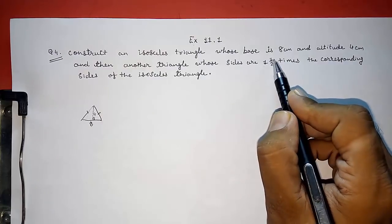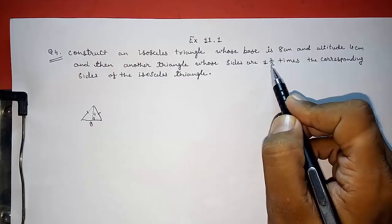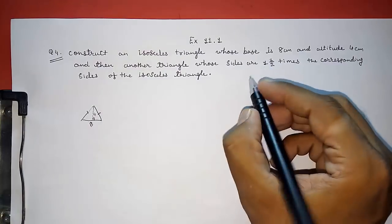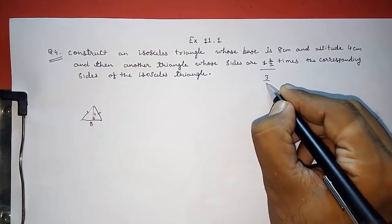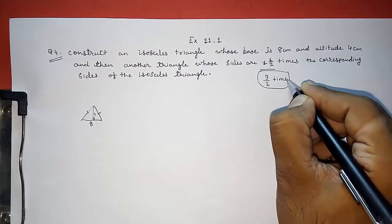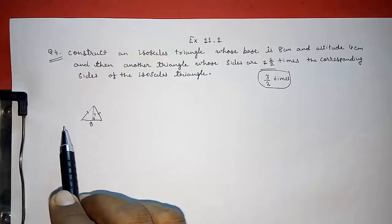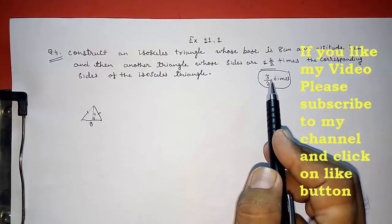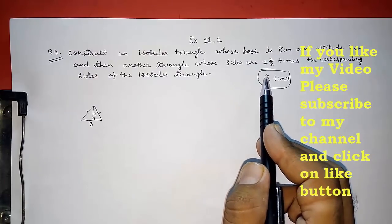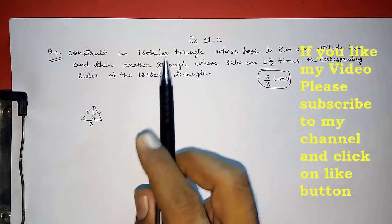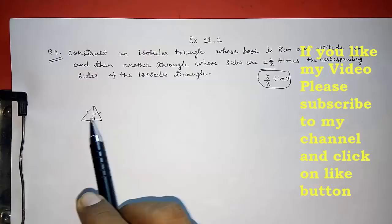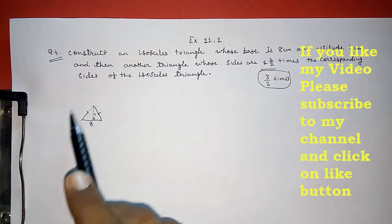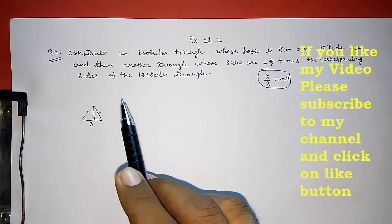This is 1½, which is in mixed fraction. So first we have to convert it into improper fraction. How we can convert? 2 times 1 is 2, 2 plus 1 is 3. So this will become 3/2 times. This you have to keep in mind. Now first we are going to draw an isosceles triangle and then 3/2 times another triangle. I told you in my previous video that it is an improper fraction. The numerator is greater. Then our new triangle will be outside this triangle. If it is a proper fraction, the new triangle will be inside. So here we will get a triangle outside this triangle.